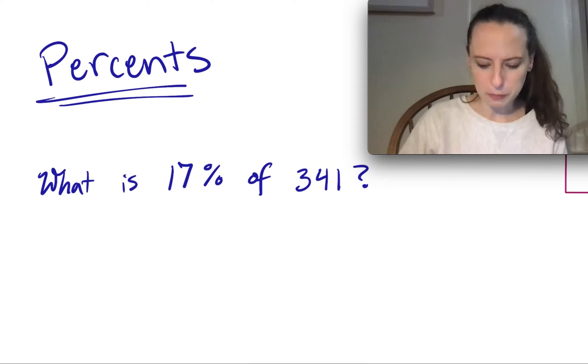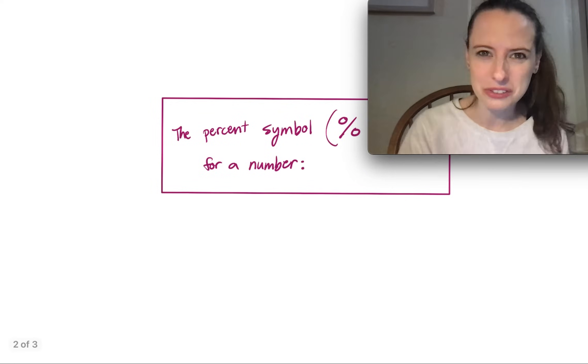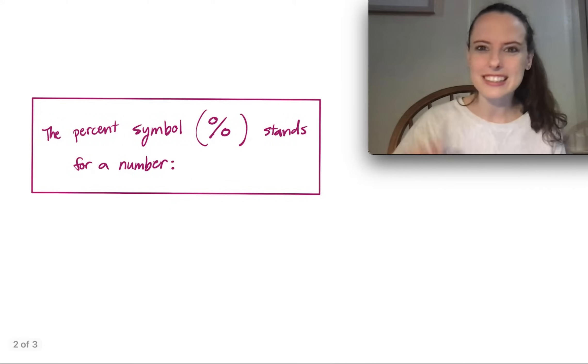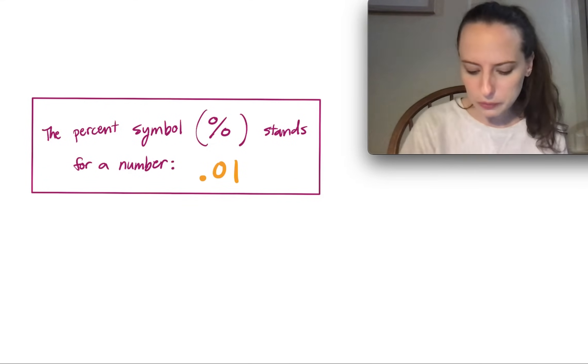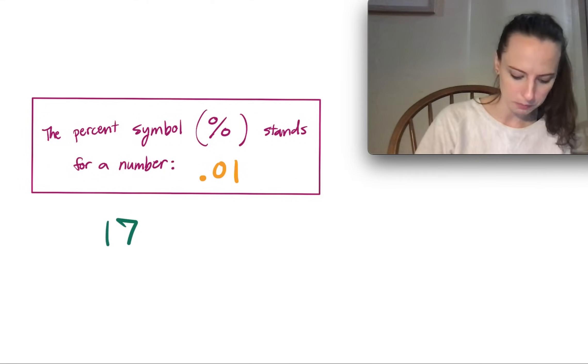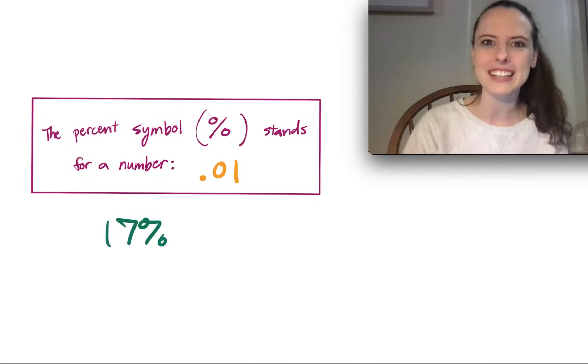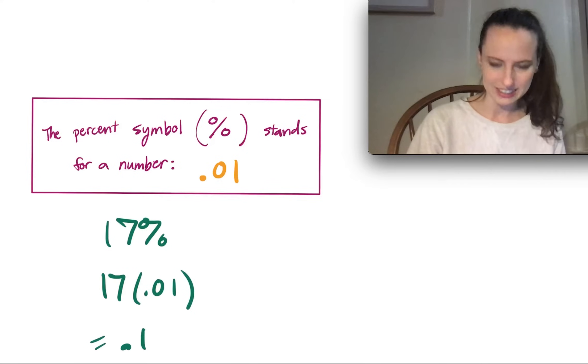The thing about percents, and a lot of people don't know this, but the percent symbol actually stands for a number. That number is .01. So when we see the number 17%, that really means 17 times .01, which if you multiply that out, it becomes .17.